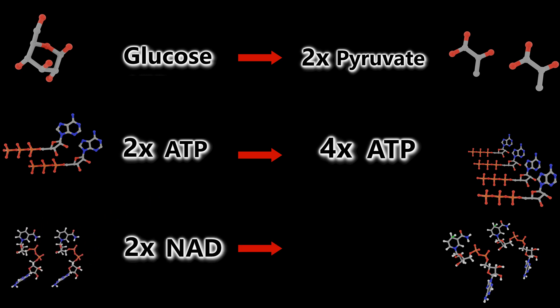And finally, we have two reduced NAD molecules into NADH molecules, which are going to play a role in the final step of the entire aerobic respiration pathway, the electron transport chain.